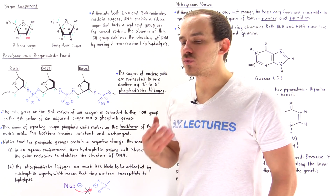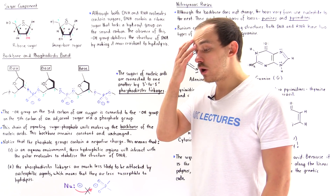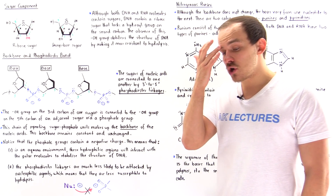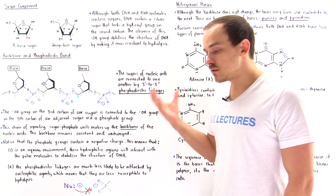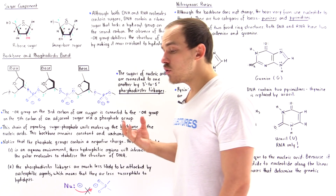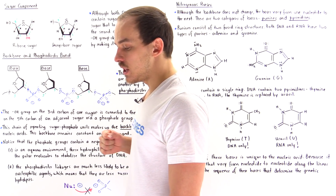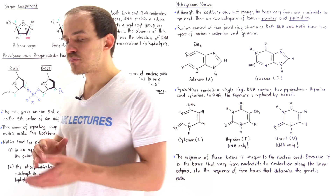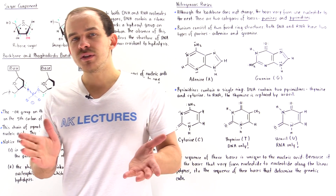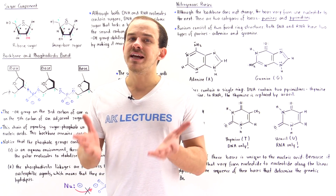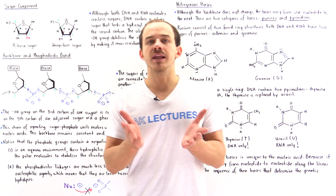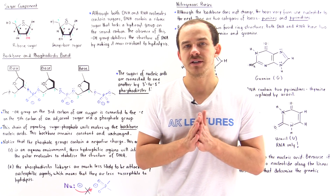Now that we have a general idea of what nucleic acids are, let's take a more detailed look at the components of nucleic acids. As we discussed previously, a nucleic acid is a linear polymer.